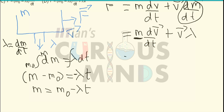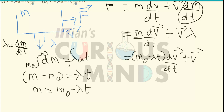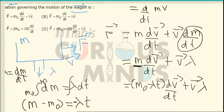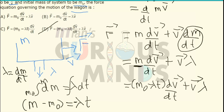So I can write the full equation as: (m₀ minus lambda t) times dv vector divided by dt plus v vector into lambda. Noting that dm/dt carries a negative sign for the declining mass, but matching with option D which gives v vector into lambda, the correct answer is option number D.